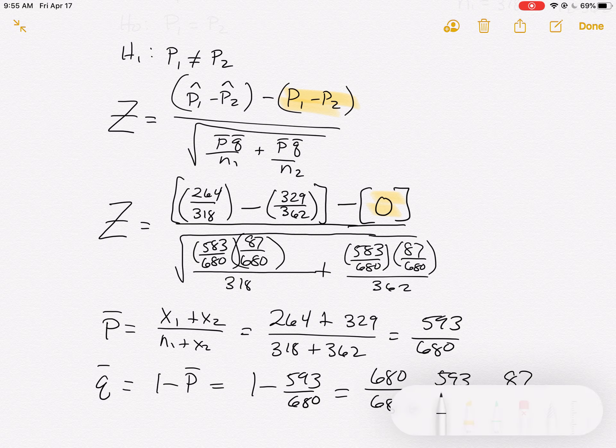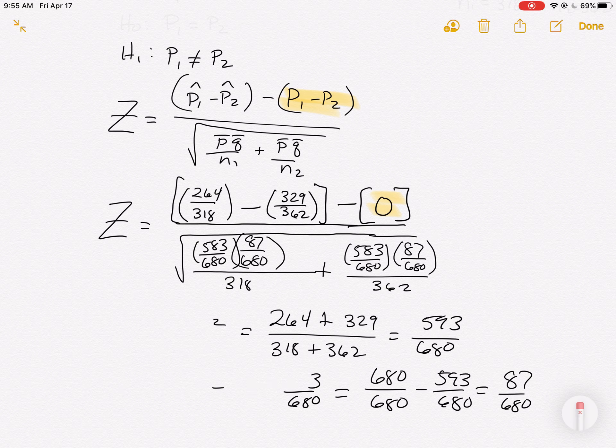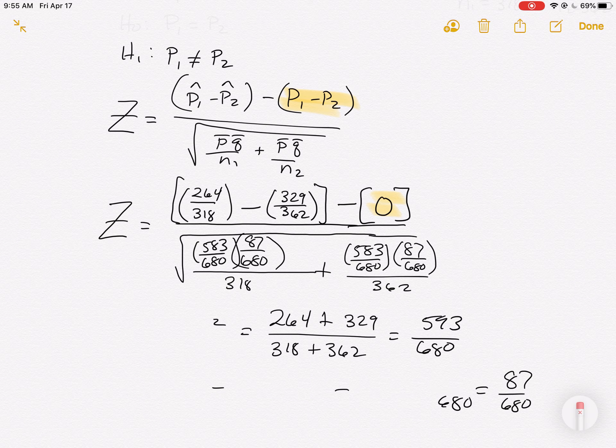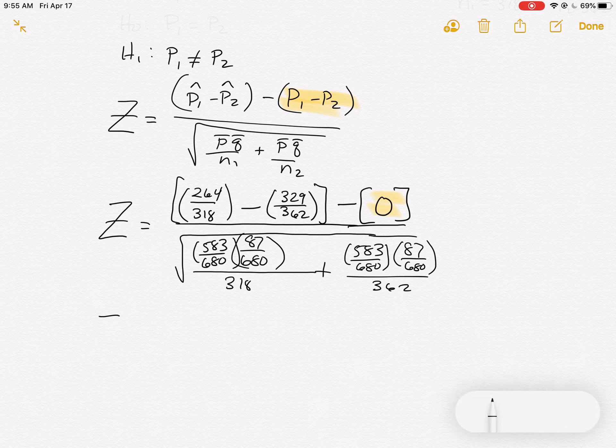If there's 593 orders that were accurate out of the total of 680, then there's 87 that are not accurate. That's what q bar is - it's the other half. Then that's all over n1, which was 318. It's the same numbers: 593 over 680 times 87 over 680 divided by 362. That's our test statistic formula.